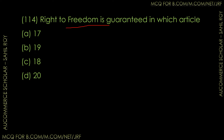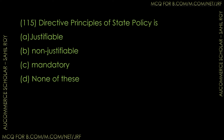Question number 114: The Right to Freedom is guaranteed in which article? Options: Article 17, Article 19, Article 18, or Article 20. The correct answer is Option B — the Right to Freedom is guaranteed in Article 19 of the Indian Constitution.